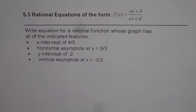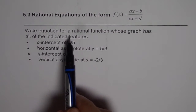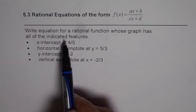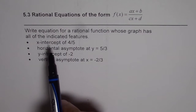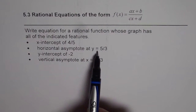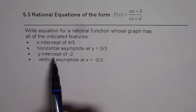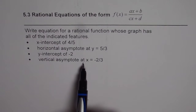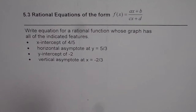I am Anil Kumar and in this video we will try to figure out a method of writing the equation of a rational function from the given conditions. The question is: write an equation for a rational function whose graph has all of the indicated features — x-intercept of 4/5, horizontal asymptote at y = 5/3, y-intercept of −2, and vertical asymptote at x = −2/3.